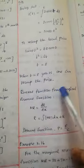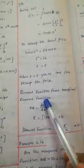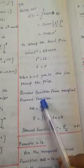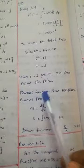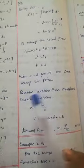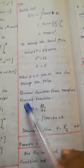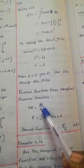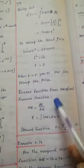Revenue function from marginal revenue function. The cost is the same procedure. Revenue function from marginal revenue function. Here, MR = dR/dx, which can also be written as R'(x).